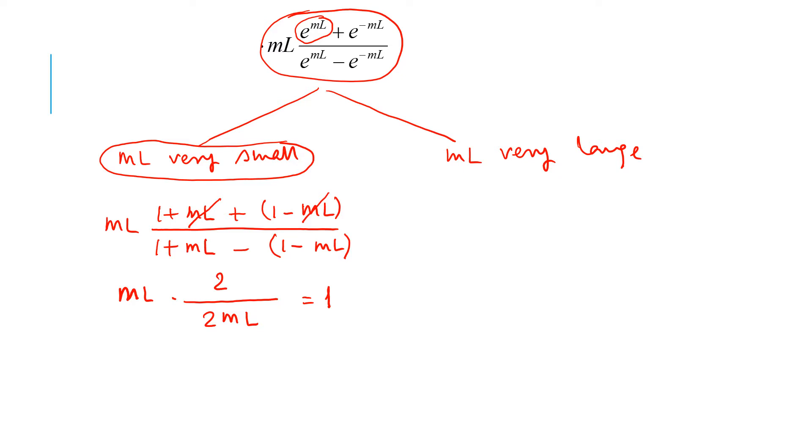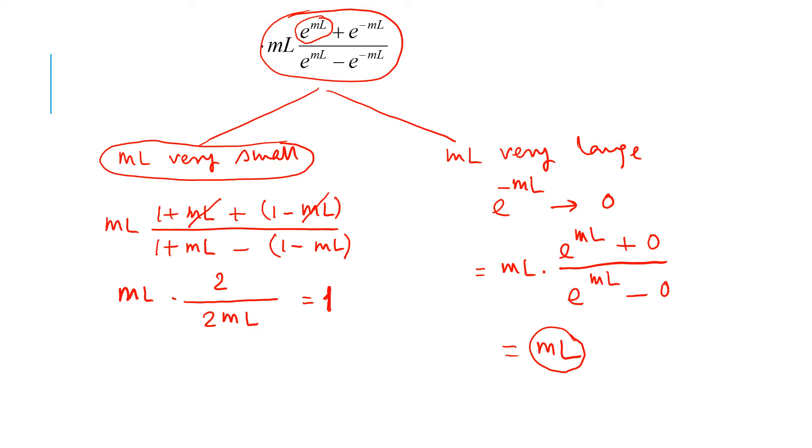When mL is very large, e^(-mL) goes to 0, so the ratio equals mL times (e^(mL) plus 0) over (e^(mL) minus 0), which equals mL. So for large values of mL, the ratio is mL.